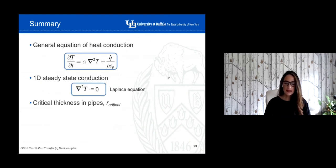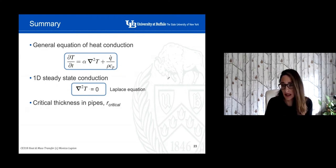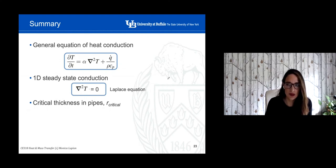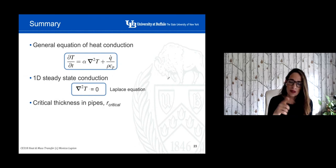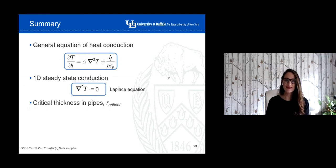Please review the information covered today, especially the critical radius of critical thickness. Try to understand why we set dQ/dr = 0, and let me know if you have any questions. Thank you so much.